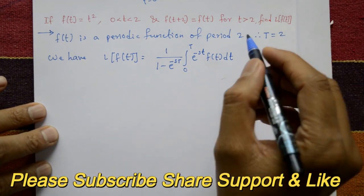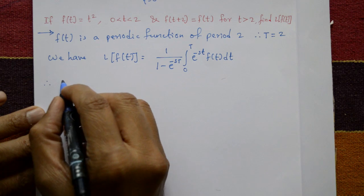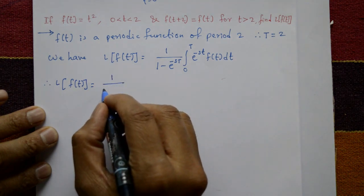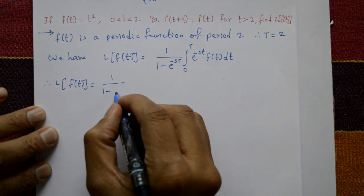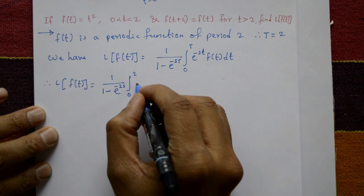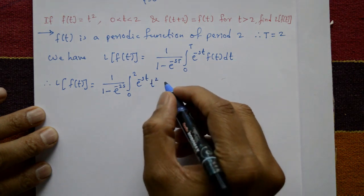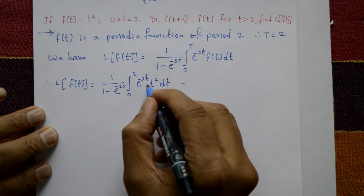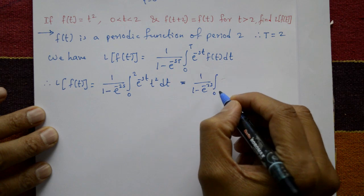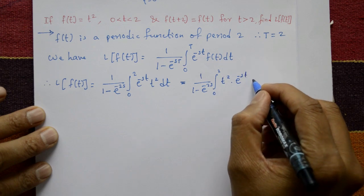Now T is equal to 2 and f of t means t squared. Therefore, the Laplace transform of f of t is equal to 1 upon 1 minus e to the power minus 2s, times the integration from 0 to 2 of e raised to minus st and f of t, which is t squared, dt. Arrange the variables: 1 upon 1 minus e raised to minus 2s, integration from 0 to 2 of t squared into e raised to minus st, dt.